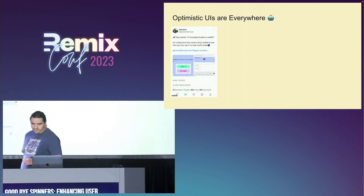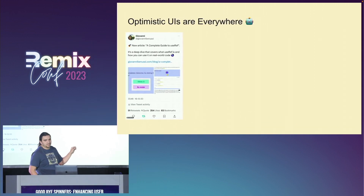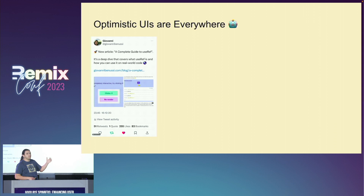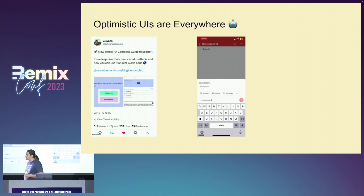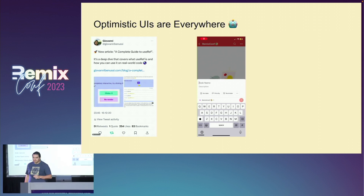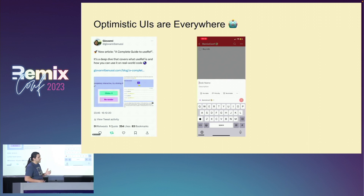Let's start with Twitter. When you like a tweet, you click the Like button and you see the icon updated immediately, and also the Like Count. They're using Optimistic UI here. Same with Todoist — when you type a new item and you click Send, you can see it right away.